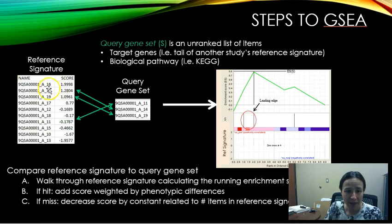If, as I'm walking, I find a hit or a match between my item in the reference signature and my item in the query gene set, I then will add the T-score, or I should say a T-score variant, to my enrichment score. And so in this way, we can weight a gene based on its phenotypic difference as seen by that user-defined statistic, in this case the T-test.